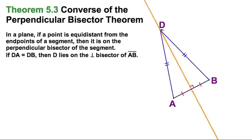I'm going to put in some tick marks because this orange line I'm tracing is in fact the perpendicular bisector. So if I have a point, in this case D, which is equidistant from A and B, then it is on this orange line, the perpendicular bisector.